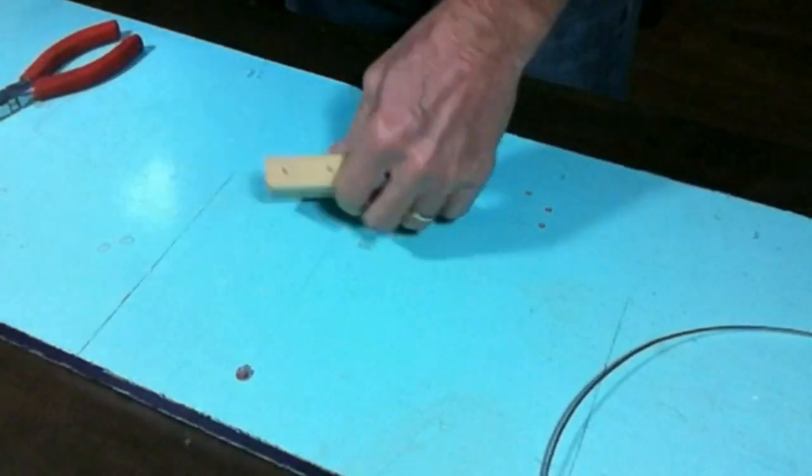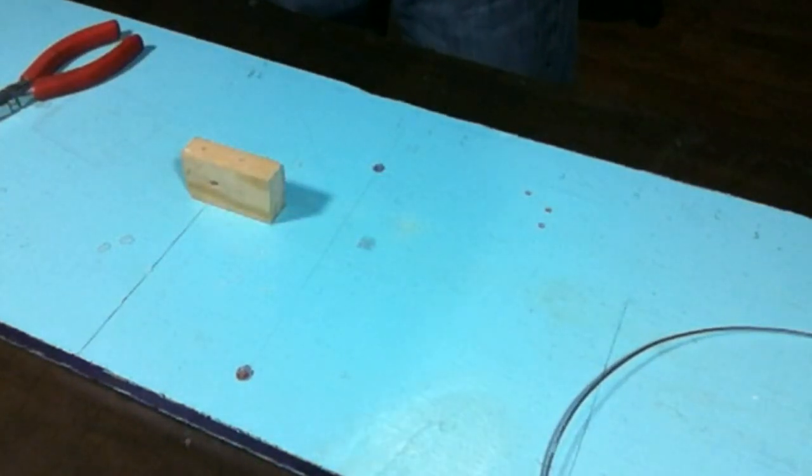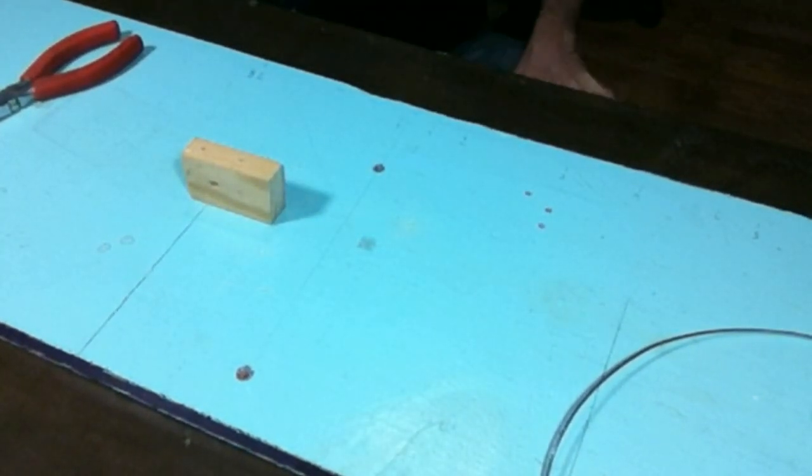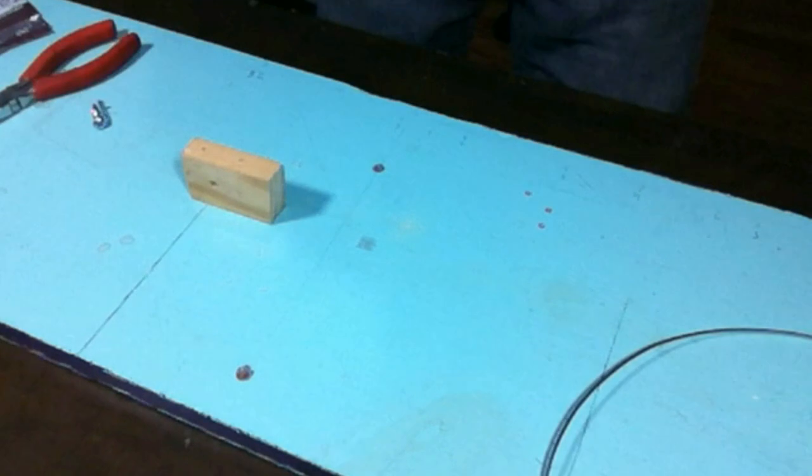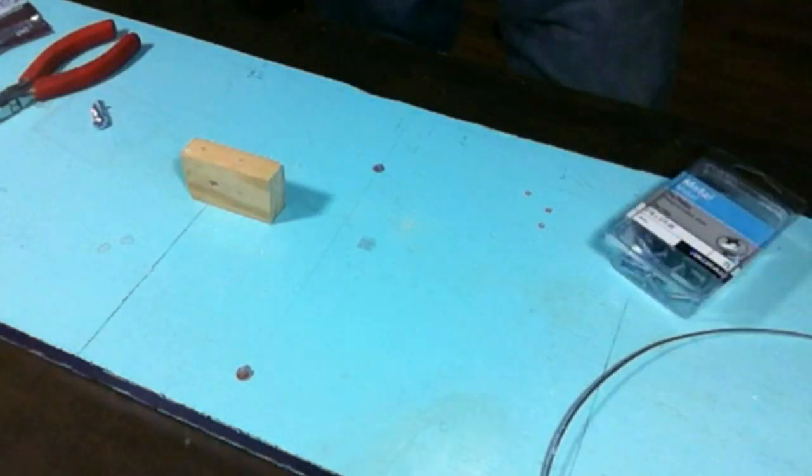Now instead of drilling my holes into the top of the wood, I'm drilling them into the side instead. The screws I'm using are number 10 metal screws.